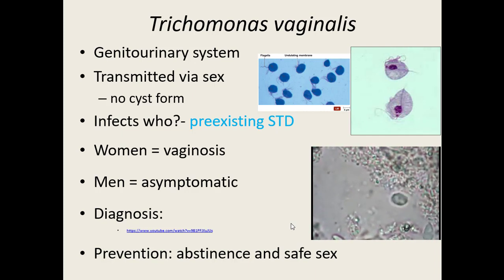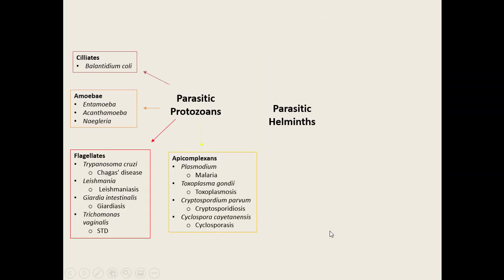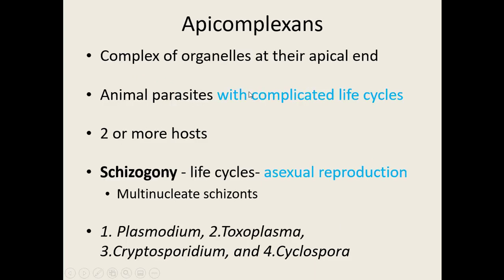Our last group of parasitic protozoans are the apicomplexans. The name refers to a complex of organelles at the apical tip. These are all animal parasites with complicated life cycles requiring at least two hosts. Most undergo schizogony — asexual reproduction forming multi-nucleated structures called schizonts — as part of their life cycle. We'll cover four important apicomplexan parasites.